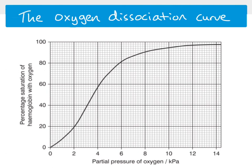This is an oxygen dissociation curve. Along the x-axis we have the partial pressure of oxygen in kilopascals, which is essentially the same concept as the concentration of oxygen — so as we move left to right, we have an increasing concentration of oxygen. On the y-axis we have the percentage saturation of hemoglobin with oxygen.